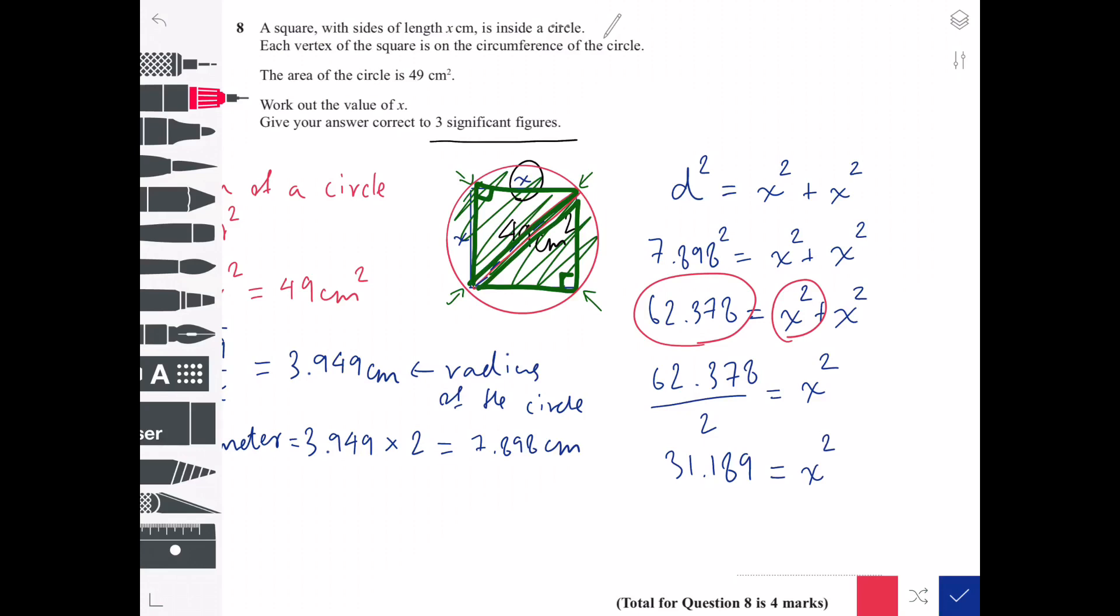Now we have to find x, and to do that I have to square root both sides of the equation. So I will get 5.58 centimeter equals x, and that is the final answer for this video. Bye.